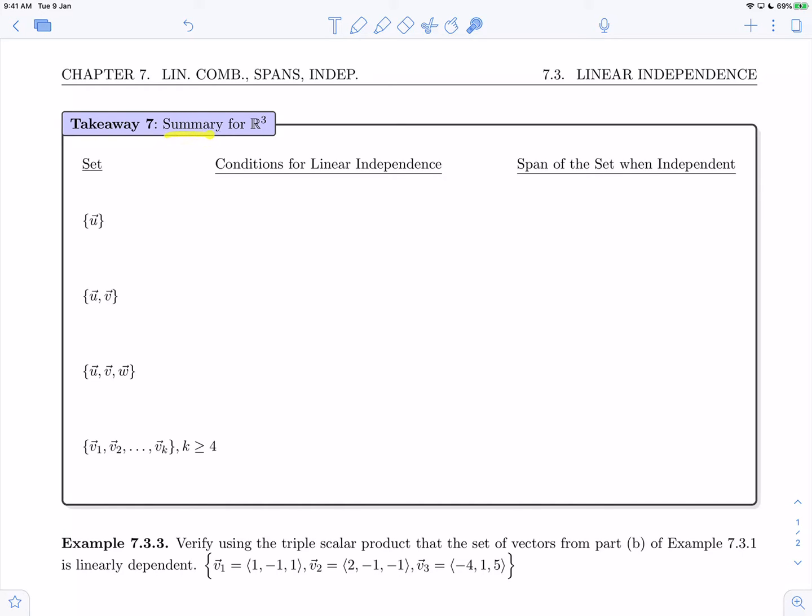Takeaway 7 is a summary about what we've seen in R3 about the conditions for linear independence of different sets and the relationship to the span that they create when they're taken as generators. If we have a set of a single vector, what is required for that set to be linearly independent is for u to be non-zero, in which case the span when u is the set of generators is a line through the origin.